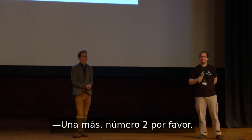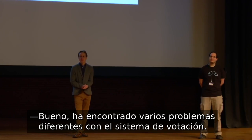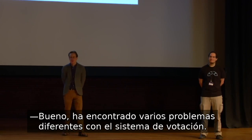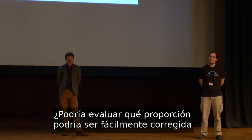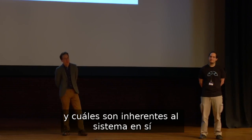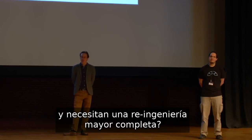Question: Of the many problems you found with their voting system, what proportion could be easily fixed versus being inherent to the system requiring major re-engineering? Well, the inherent thing about all of these systems is that they rely on the correct and secure operation of code running in a machine where people can't see the votes. You can't verify the votes with your eyes or hands because they must be processed in secret by a computer.